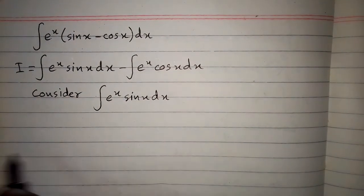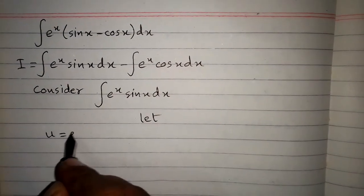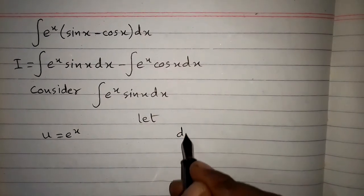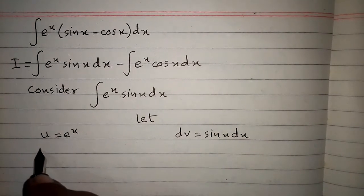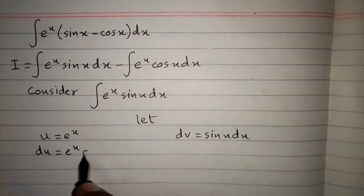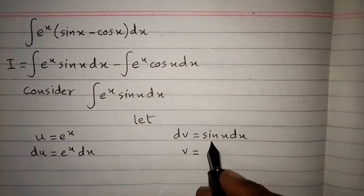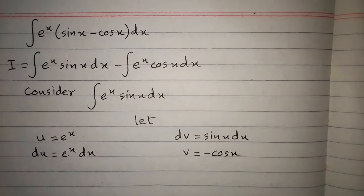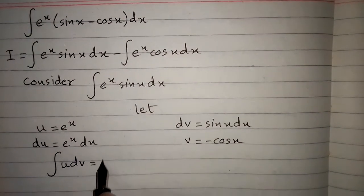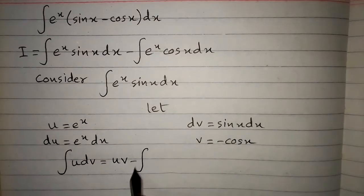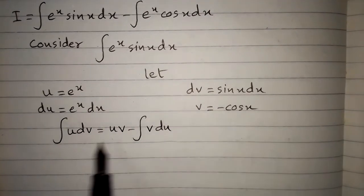We will integrate this with the help of integration by parts. Let u equal e to the power x and dv equal sin x dx. Then du equals e to the power x dx. Taking the integral of both sides, v equals minus cos x, since the integral of sin x is minus cos x. The formula for integration by parts is: integral of u dv equals u v minus integral of v du.